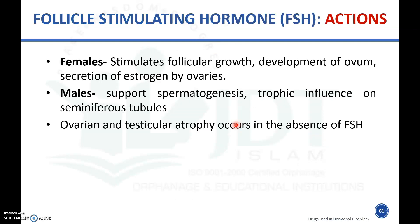Coming to the actions of follicular stimulating hormone (FSH): in females, FSH stimulates follicular growth, development of the ovum, and secretion of estrogen by the ovary. In males, FSH supports spermatogenesis through trophic influence on the seminiferous tubules. Ovarian and testicular atrophy will occur in the absence of FSH.